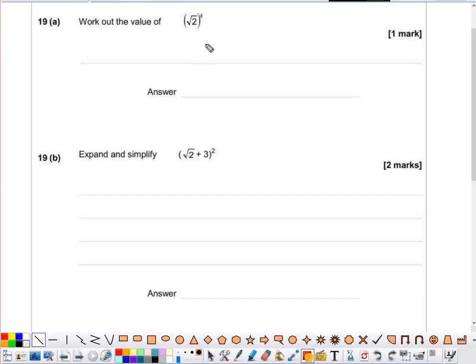Because we're dealing with indices here, it's a good idea to replace the square root with its index value. Instead of a square root, we can say that would be 2 to the power of a half, as a fractional index gives us a root.